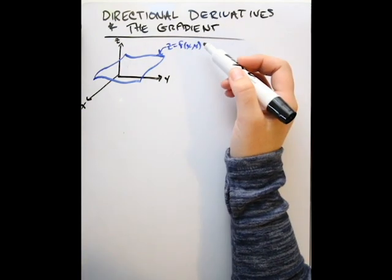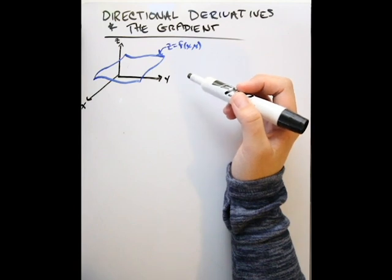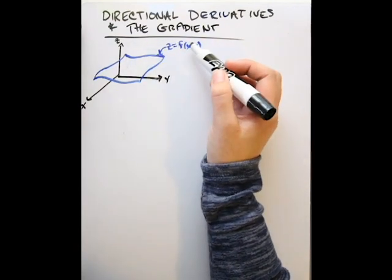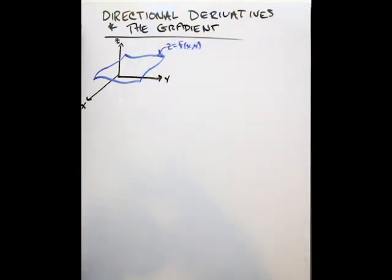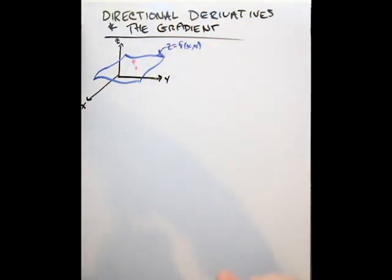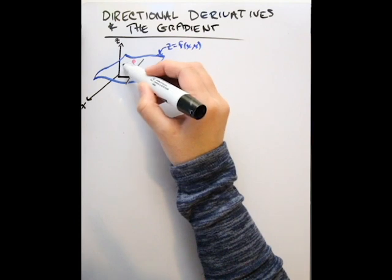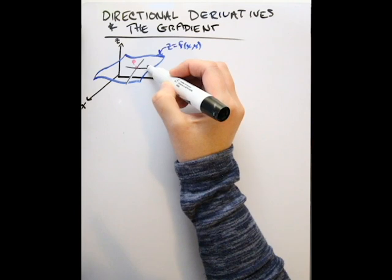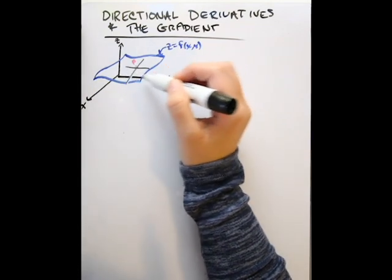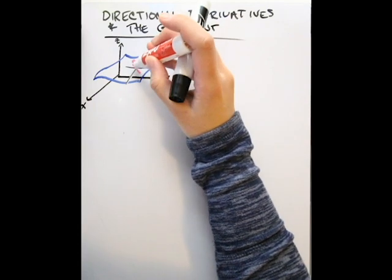In this video, we're going to talk about directional derivatives and the gradient. You've learned about partial derivatives, and partial derivatives tell us a lot about the rate of change of a function, but they don't really answer some important questions — that's where directional derivatives come in. For a surface in three dimensions depending on x and y, if we're at a point P, the two partial derivatives tell us the rate of change parallel to the x-axis and parallel to the y-axis. But what if we want to go any of the infinite other directions at this point? That's what the directional derivative is about.